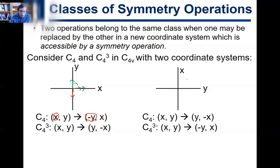Now we do the same exercise in our alternate coordinate system — the one where X and Y are switched. In this alternate system, apply C4: the X vector (which is where Y used to be) spins 90 degrees and maps to Y, and the Y vector spins 90 degrees and maps to negative-X. So in the alternate system under C4: X → Y and Y → −X.